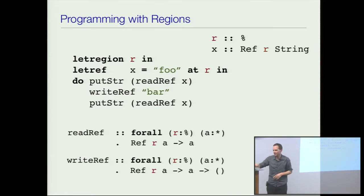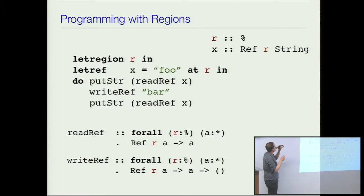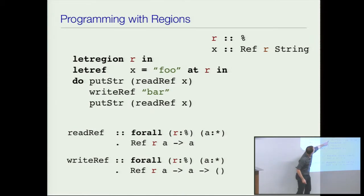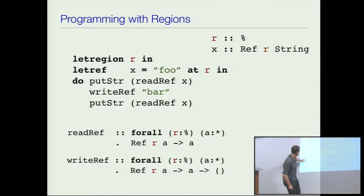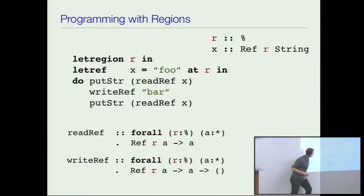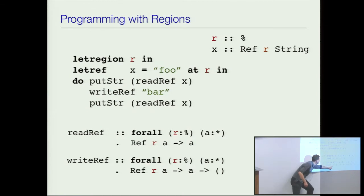When I create a reference x — which holds the string foo — the type also records what region it's in. So x is a reference in region R which holds a string. Here are the types of read ref and write ref. These types have quantifiers out front, so read ref can read a reference in any region, and write ref can write a reference which is in any region because it's quantified.